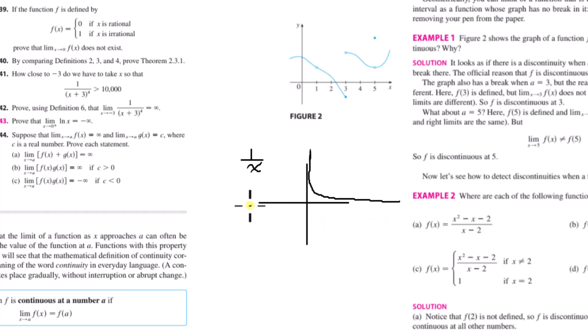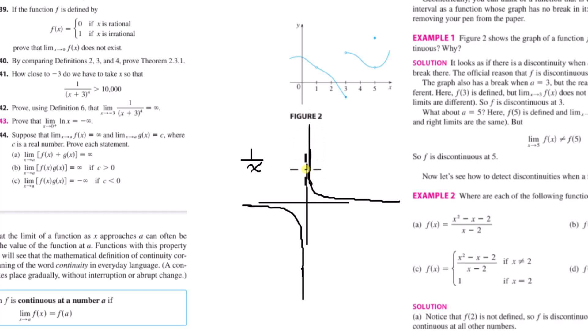Same thing: if x is less than 0, it's continuous for all x there. It's just not continuous at 0, because if I want to draw the function and cross over 0, I have to stop, pick up my pen, and come back. So it's not continuous at 0 — it's continuous everywhere else. When you say something's continuous, a lot of times you're specifying an interval.